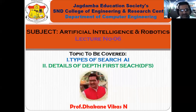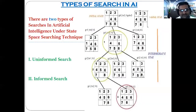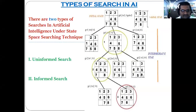Now, under the state space search there are two categories of searching utilized in artificial intelligence. Today we are going to discuss those two kinds of search, each of which is further divided into different techniques. The first type is uninformed search and the second is informed search.